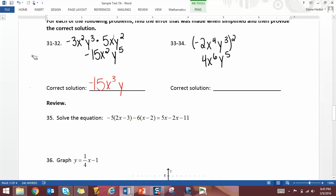They forgot that the one exponent on the x makes it x to the third. And on the next one, it looks like instead of multiplying the powers to the powers, they were adding. So it should be 4x to the eighth, y to the sixth.